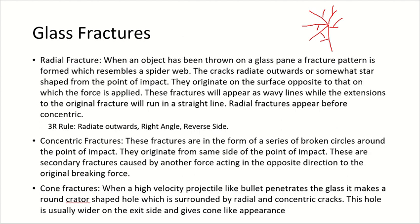The various types of glass fractures: first is radial fracture. When an object hits the glass, it forms a spider-web like structure, known as radial crack or radial fracture. It is somewhat star-shaped. There is a 3R rule for radial fractures: they radiate outwards, they are on the reverse side to the point of impact, and are at right angles.